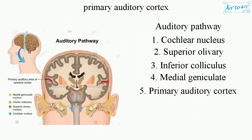Auditory Pathway: 1. Cochlear Nucleus, 2. Superior Olivary, 3. Inferior Colliculus, 4. Medial Geniculate, 5. Primary Auditory Cortex.